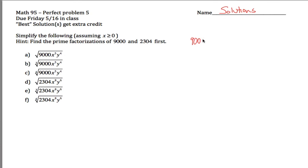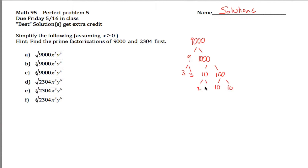To figure out the prime factorization of 9,000, just find any two positive integers larger than 1 that multiply to give you 9,000. The two that would occur to me are 9 and 1,000. Then 9 is 3 times 3, and 1,000 is 10 times 100, which is 10 times 10. Each of these 10s are 2 times 5. So what I get is that 9,000 is 2 times 2 times 2 times 5 times 5 times 5 times 3 times 3.